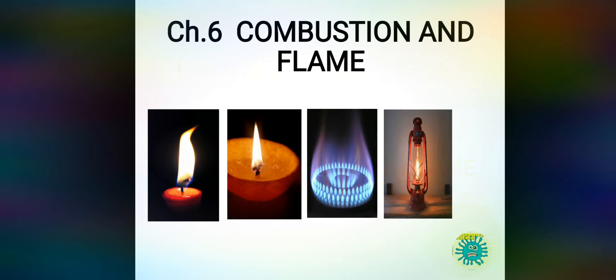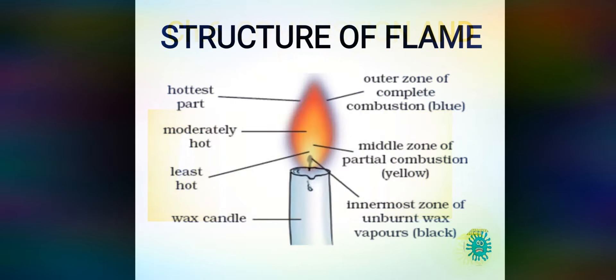So you must have seen the flame. Now in the structure of flame, we have three zones. The first one is the outermost zone, the second is the middle one, and the third is the innermost zone of unburned wax and vapor. The outermost zone appears blue in color and it is the hottest area of the flame.